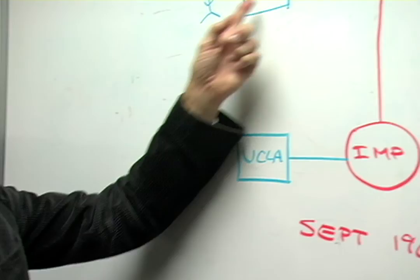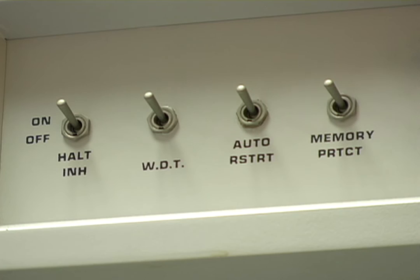One month later, a second switch was delivered to Stanford Research Institute. Then on October 29th, 1969, right here at UCLA on the third floor of Belter Hall, Kleinrock's group attempted to log in to the node at Stanford Research Institute. This would be the first message sent on the Internet.